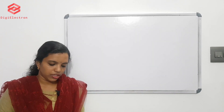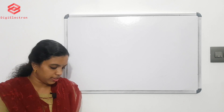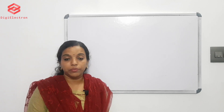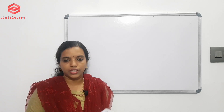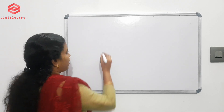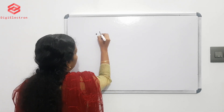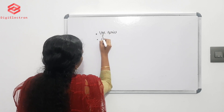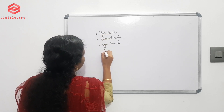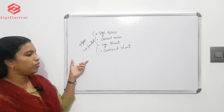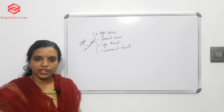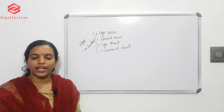The last question: what are the types of negative feedback? There are 4 types of negative feedback: Voltage Series, Current Series, Voltage Shunt, and Current Shunt. These are the 4 types of negative feedback. This is how we learn from this module. In the next video, bye.